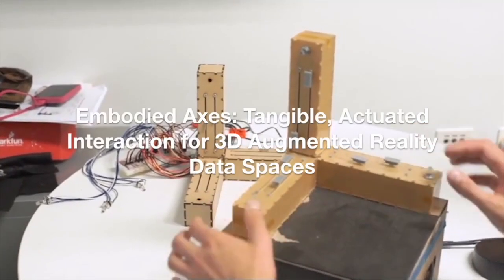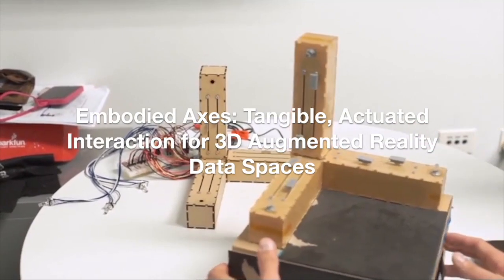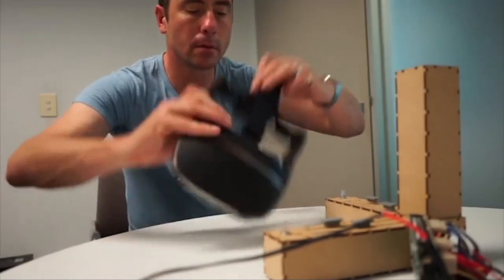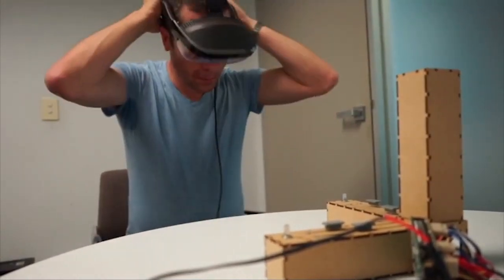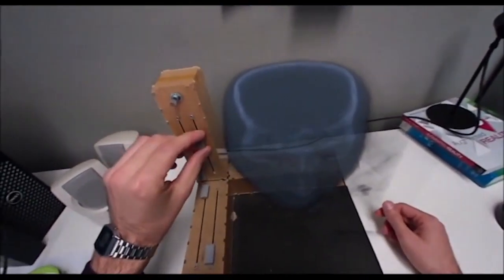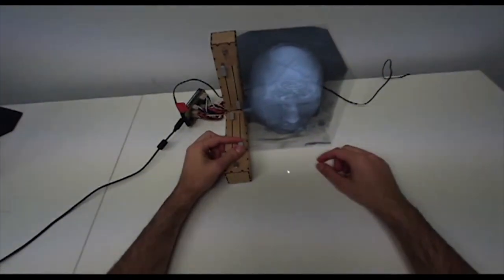We present Embodied Axes, a device for making precise selections in 3D visualizations. The device is designed to be used with an augmented reality head-mounted display such as the Meta 2 pictured here. The AR display provides the immersive visualization of the data, while the user input is performed with the Embodied Axes.